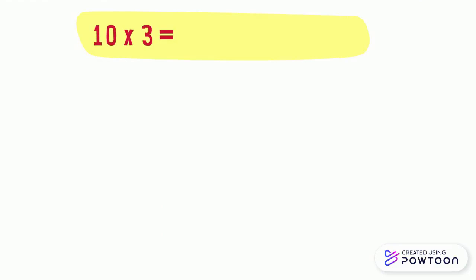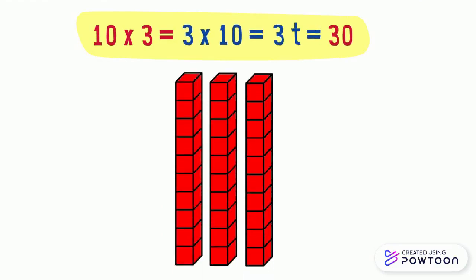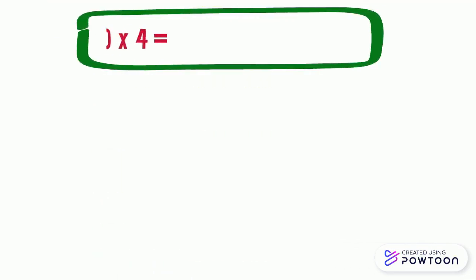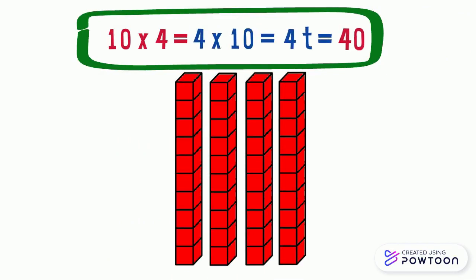10 times 3 equals 3 times 10 equals 3 tens equals 30. 10 times 4 equals 4 times 10 equals 4 tens equals 40.